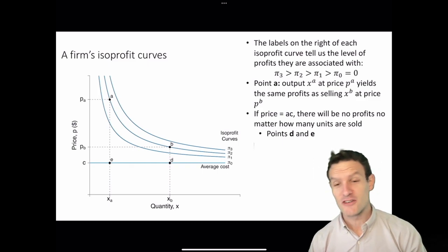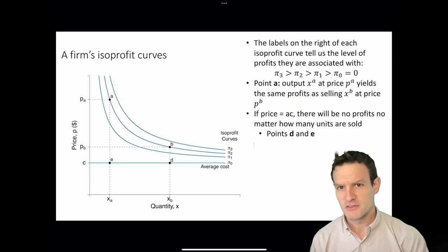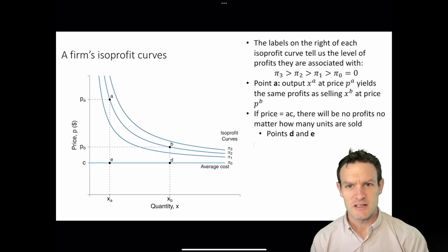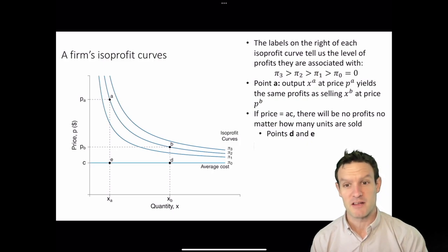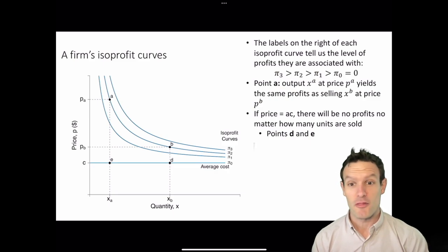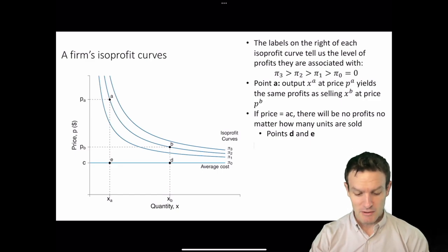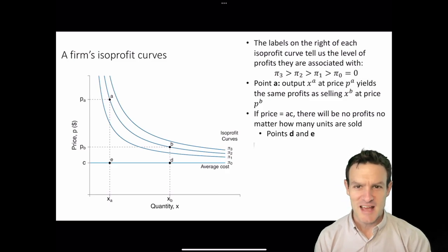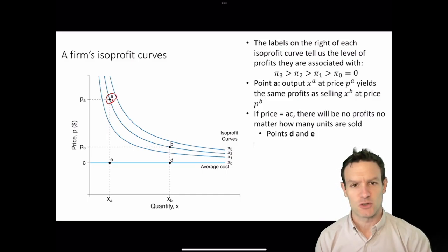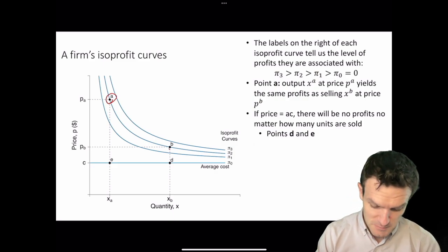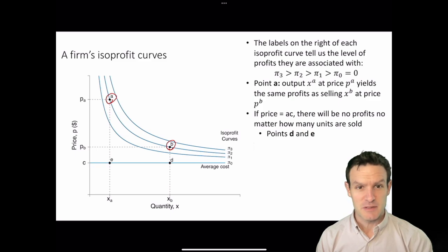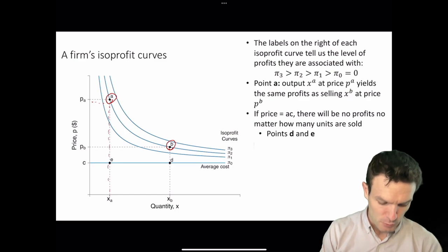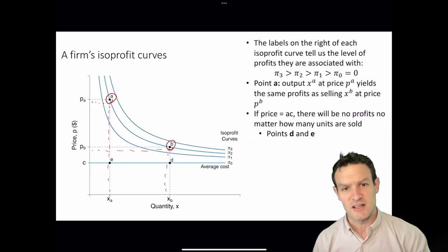Starting with the isoprofit curves, the labels on the right of each isoprofit curve tell us the level of profits they are associated with. Pi three is greater than pi two, greater than pi one, greater than pi zero, and pi zero has zero profits. Pi here represents profits. At point A, we have a combination of price and quantity of P_A and x_A, and that combination results in the same profits as point B, with price P_B and quantity x_B.